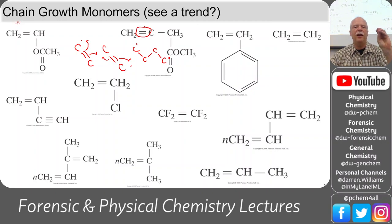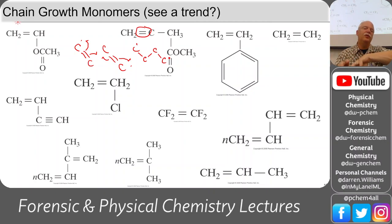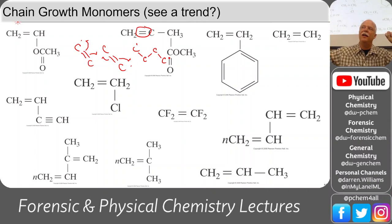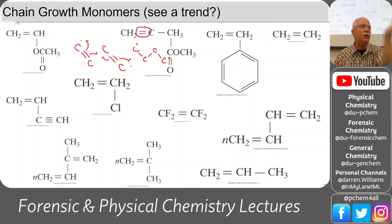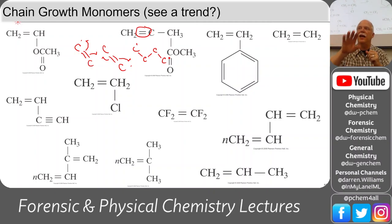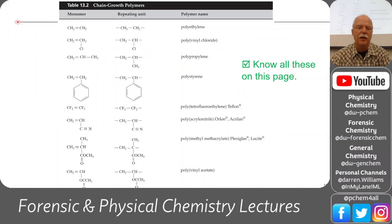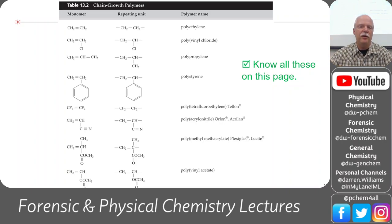We can do this by free radicals, by cations—pulling two electrons from one side to get a bare carbon cation that the next double bond is attracted to—or by anions, donating electrons to push anions that attack exposed carbons. We're going to go through those mechanisms, but first let's learn the names of the different monomers.